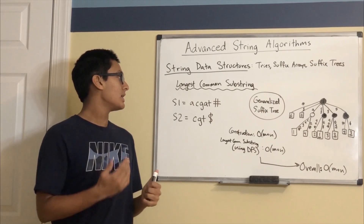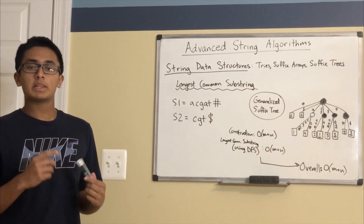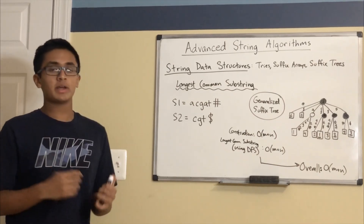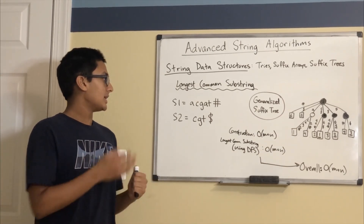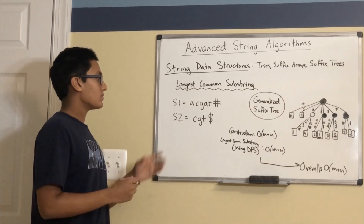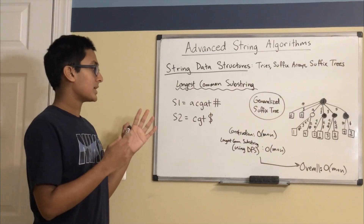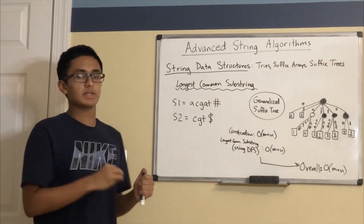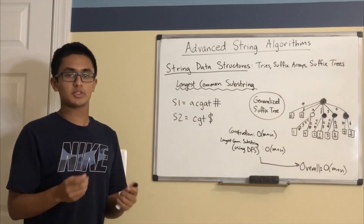We'll finish the lecture by revisiting the longest common substring problem. Earlier, we solved this using dynamic programming with a solution of O(m × n). However, using a suffix tree, we can find the longest common substring in O(m + n). Let the two strings be S1 and S2. To differentiate between the two strings in the suffix tree, we'll let the ending character of S1 be a hashtag as opposed to a dollar sign. When constructing the suffix tree, we'll put both strings in the same generalized suffix tree, with no other differences from a regular suffix tree for a single string.